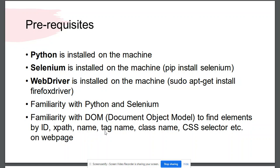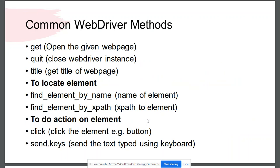We need to be familiar with Python and Selenium, and it will be good to know about the Document Object Model. It helps us to find different elements on the web page which can be found using ID, XPath, name, tag, class, or CSS selector.